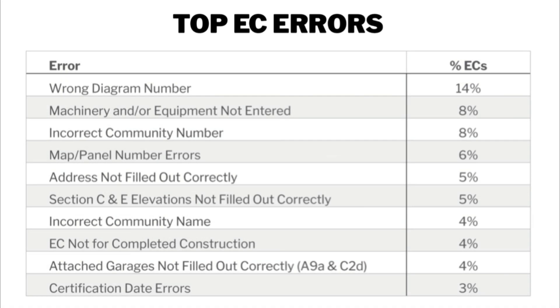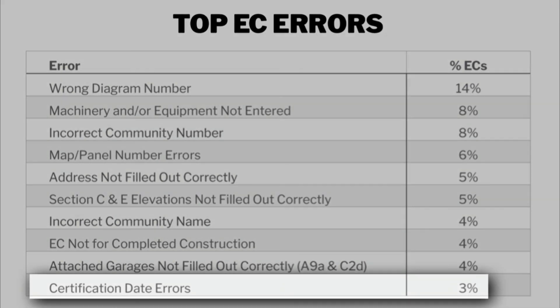Lastly, there are quite a few certification date errors, ranging from not dating the form to using an outdated form. When an outdated form is the case, you can either get the surveyor to recreate the EC using the current form, or attach the outdated form to a new EC, mark G1, and sign and date that section on the new form. This concludes our training on how to correct an EC. Please be sure to watch our other EC training videos covering errors for each section, along with the two-part series on general issues. Thanks for watching!